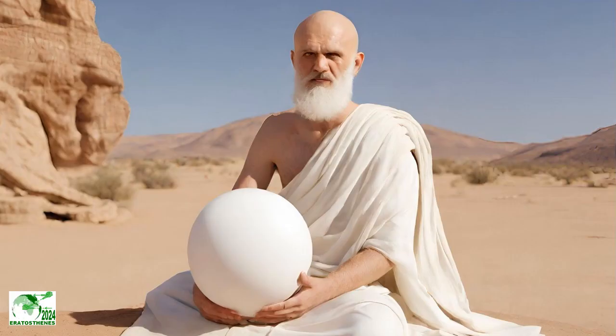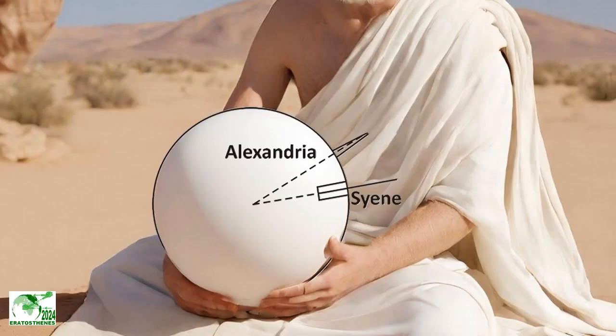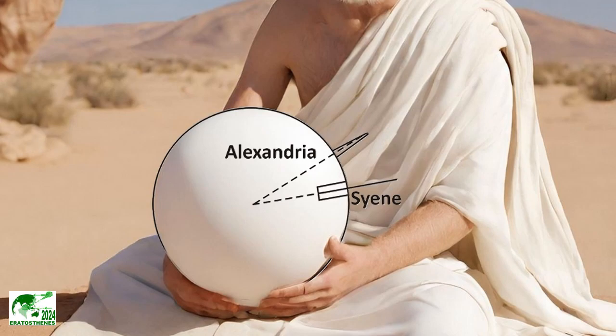By extending the vertical in Alexandria — the obelisk — and the vertical in Syene — the well — these two verticals should by definition meet at the center of the earth.